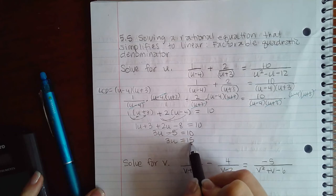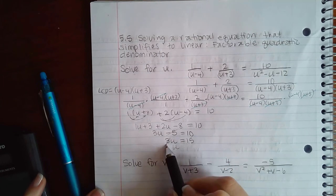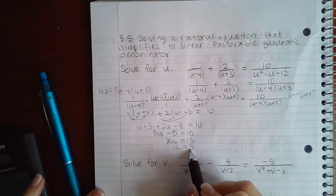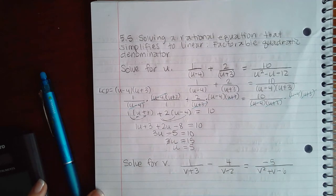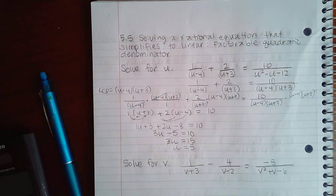If I add 5 to both sides, I will get 3u equals 15. Then if I divide both sides by 3, I will get u equals 5. All I have to do is make sure that my answer does not make any of the denominators 0.